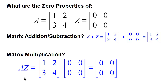Now let's look at matrix multiplication. If we have a matrix A and a matrix Z and we multiply them, we get one times zero plus two times zero, and so on, and we wind up with a zero matrix. This also matches up with number multiplication — when we multiply a matrix by the zero matrix, we get the zero matrix, just like any number times zero is zero.